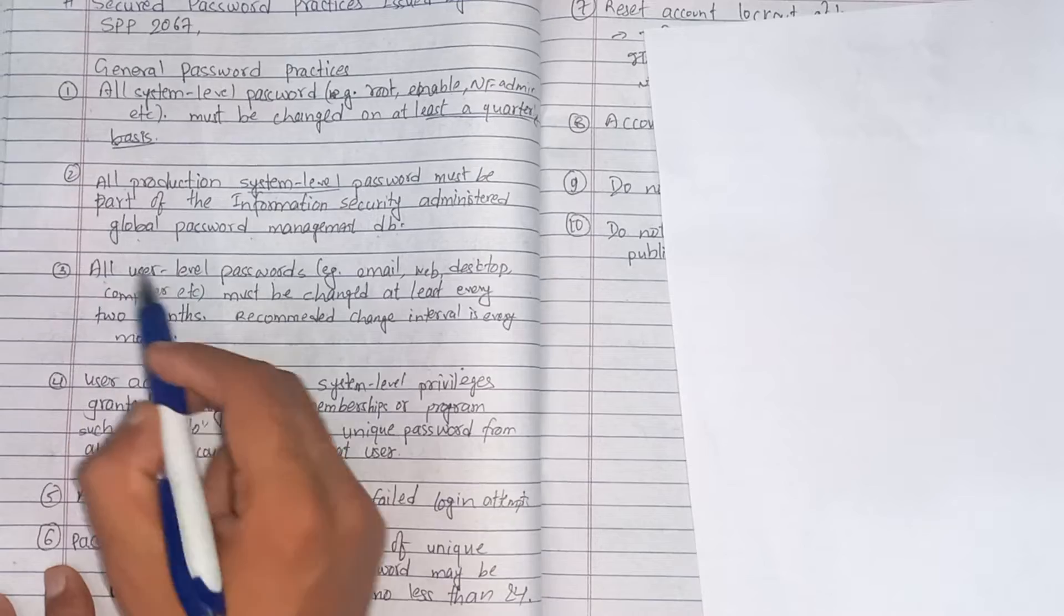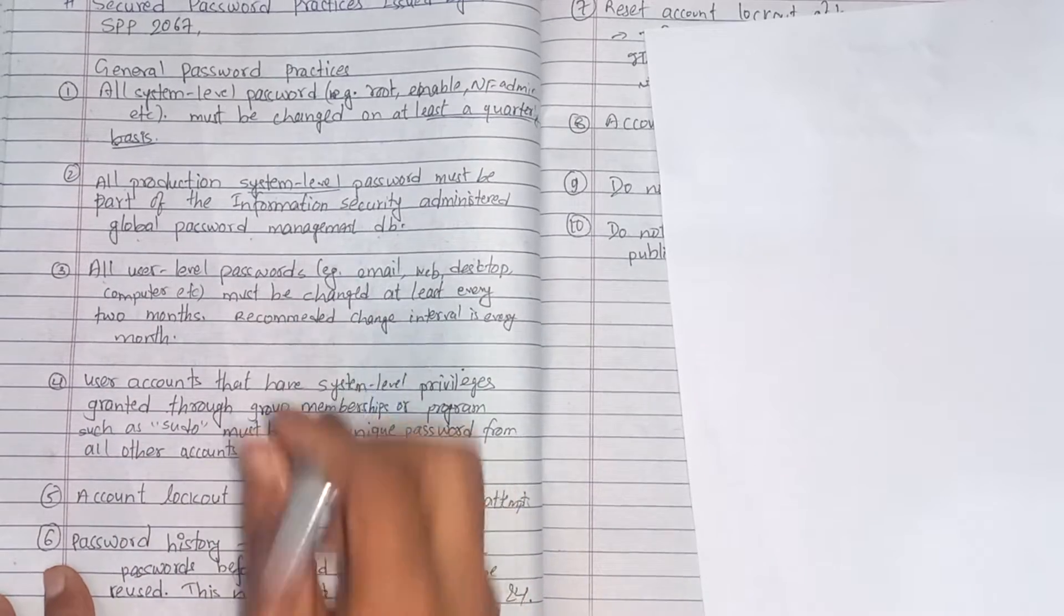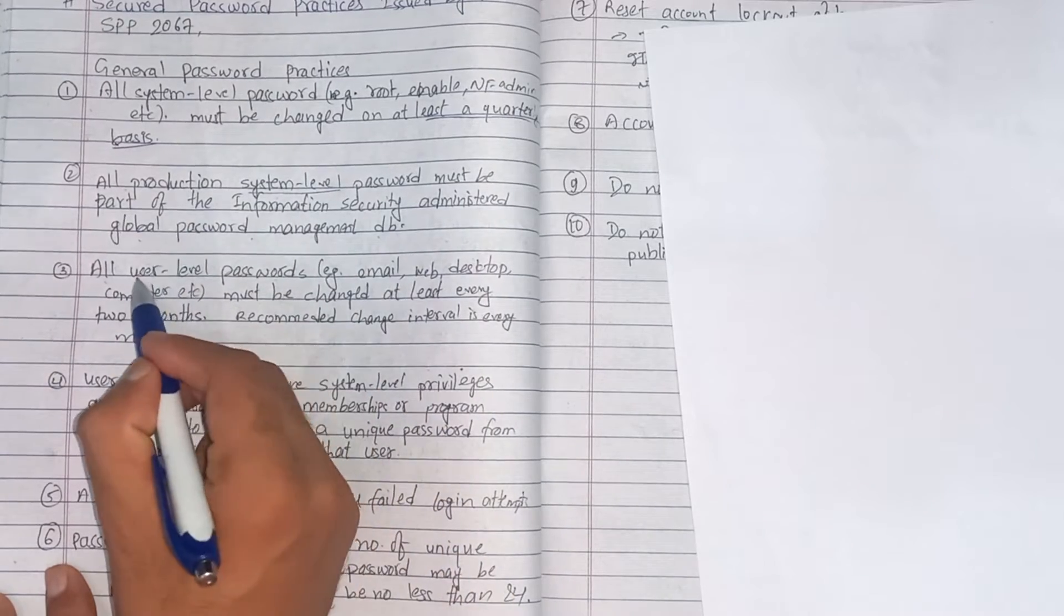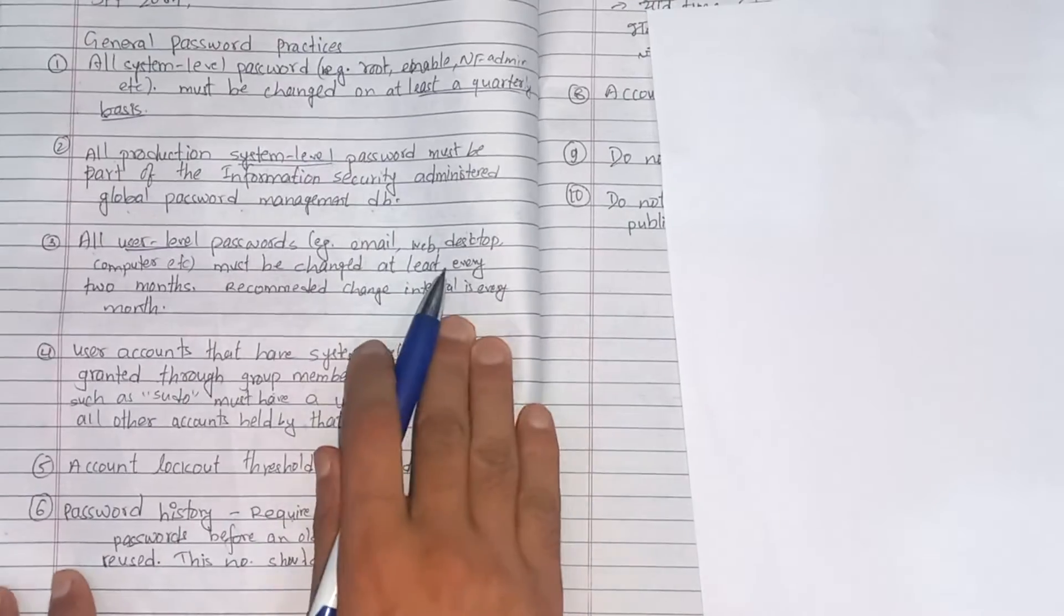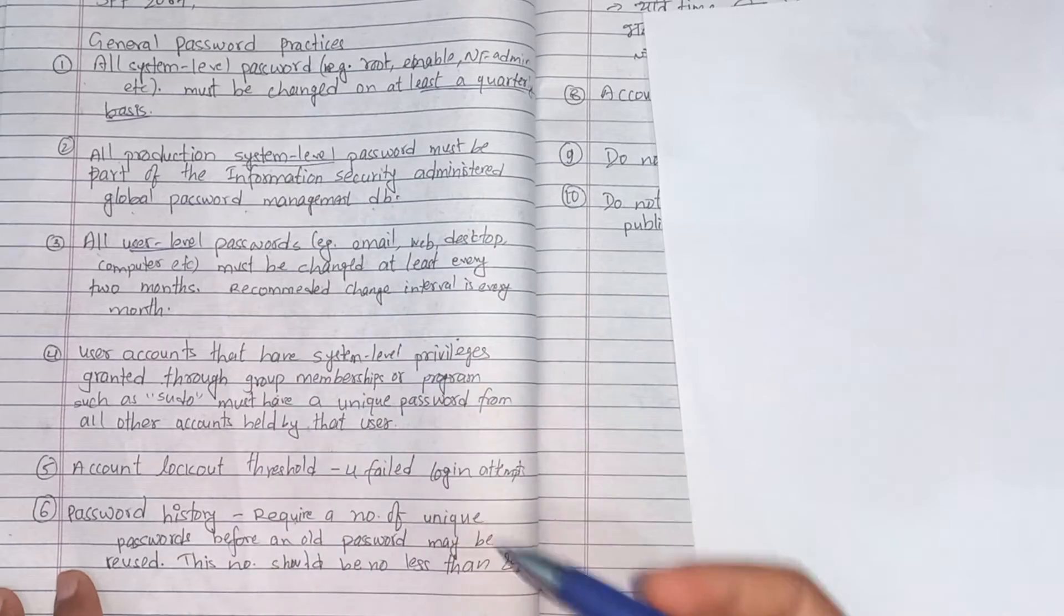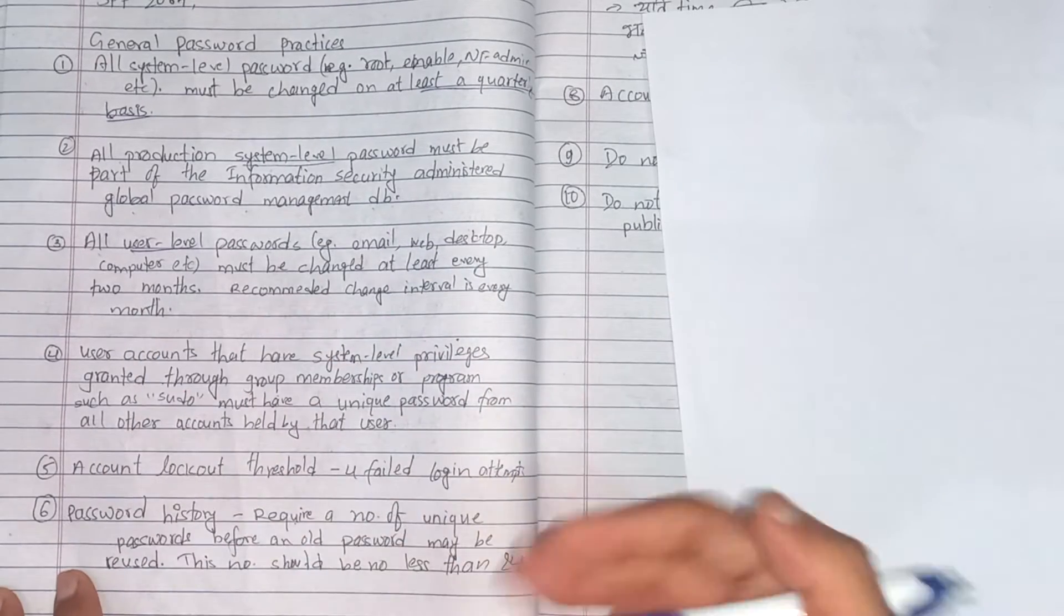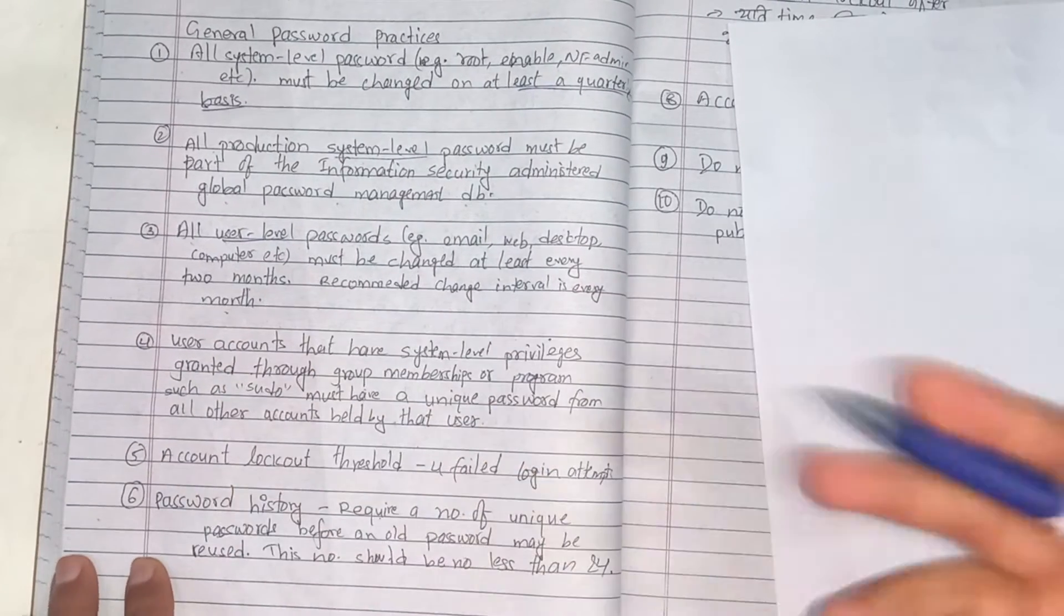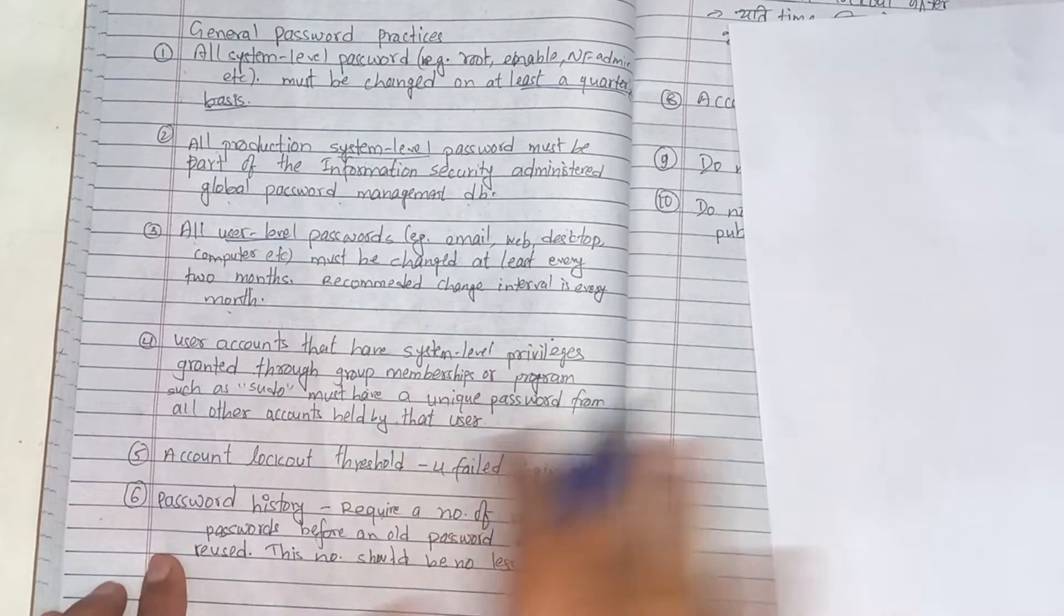All user level passwords for email, web, desktop, computer, etc., must be changed at least every 2 months. Recommended time interval is especially 1 month, at least 2 months or 90 days.